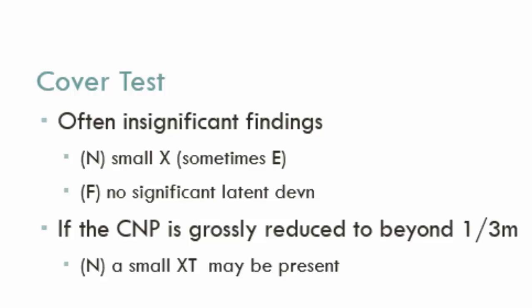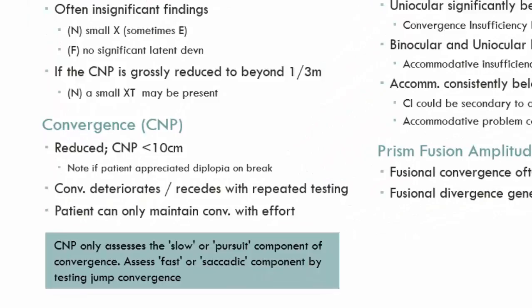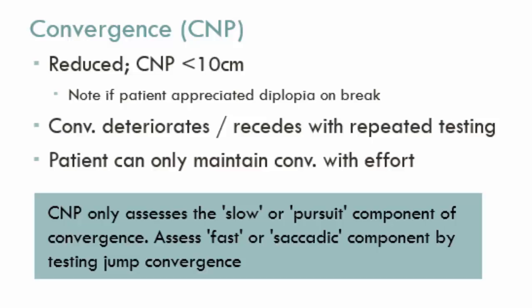A key component of diagnosing convergence insufficiency is measuring the convergence near point using the RAF gauge, which you can see to the right. We ask the patient to look at the dot and tell us the point at which they see two dots, while we objectively watch the eyes to see when they stop converging. Some patients experience diplopia on break whilst others suppress. For some patients, the CMP may initially be reasonable but deteriorates with repeated measurements — for example, going from 10cm to 14cm to 20cm.